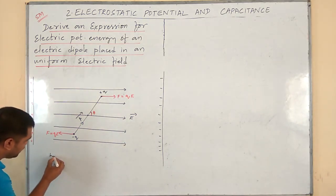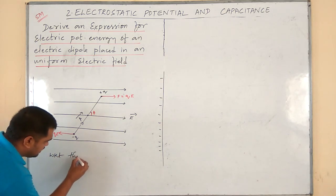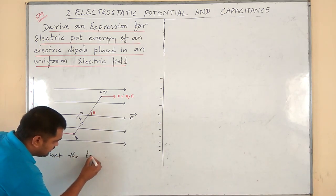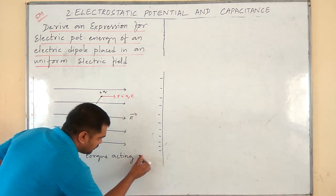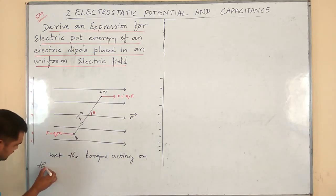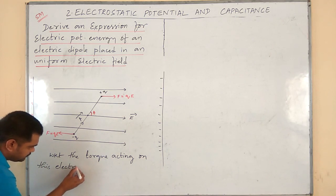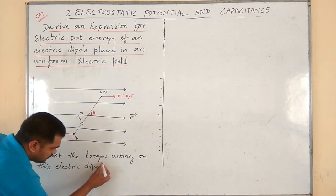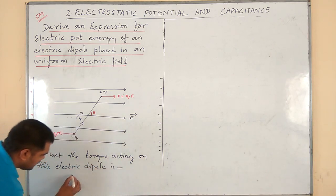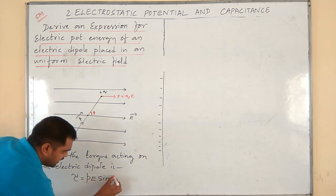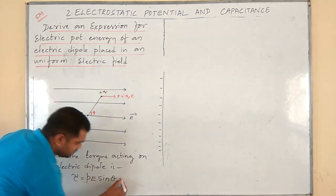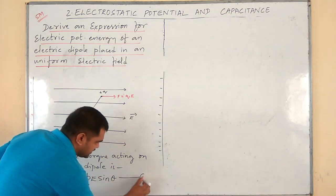The torque acting on this electric dipole is given by τ = pE sinθ. This is equation number one.